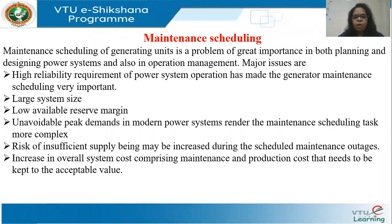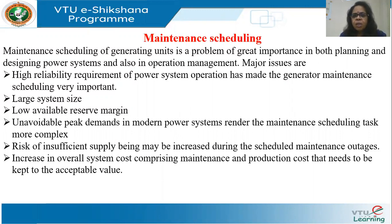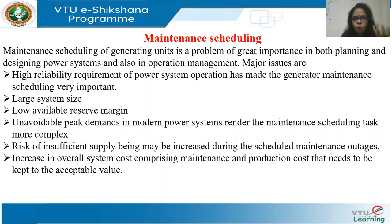The components of the system — like transformers, generators, transmission lines, etc. — have to be maintained periodically. The most simple form of maintenance is what we call breakdown maintenance: when an equipment fails, you maintain it. This can lead to problems because sometimes the equipment may continue operating under low efficiency conditions and may break down only when it is beyond repair. You may not be prepared for the breakdown — you don't know when it occurs.